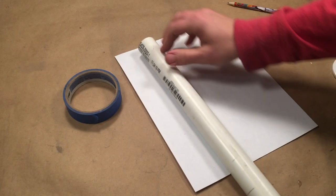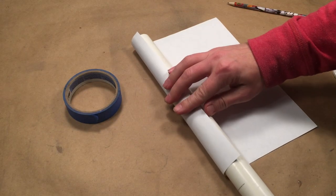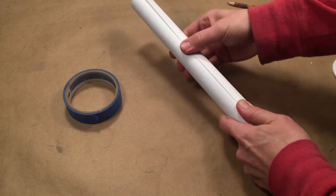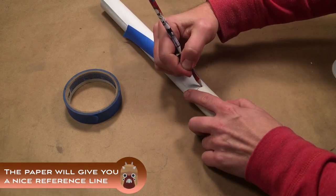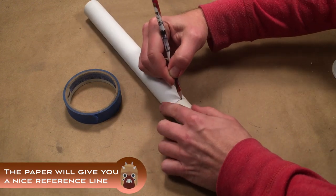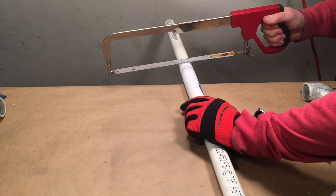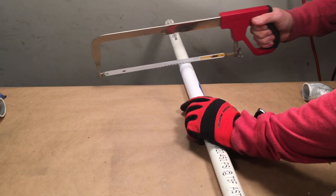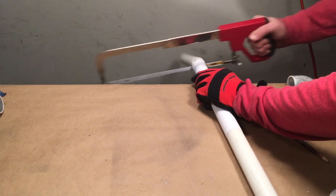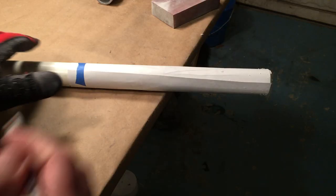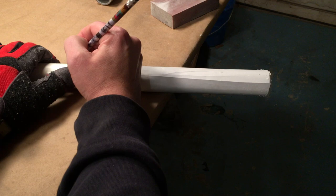Using a standard sheet of eight and a half by eleven inch paper, wrap it around the one inch PVC pipe and line up the edges. Draw a line along the paper's edge. Using a hacksaw, cut the one inch PVC pipe.